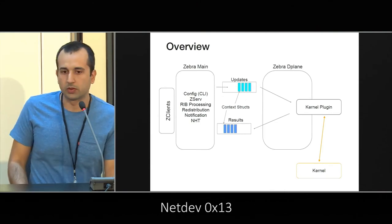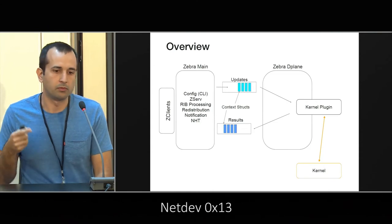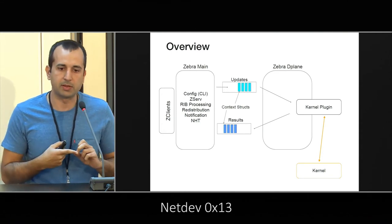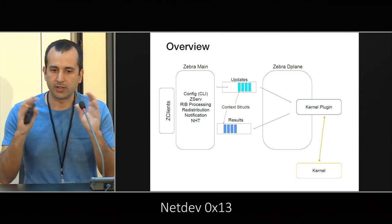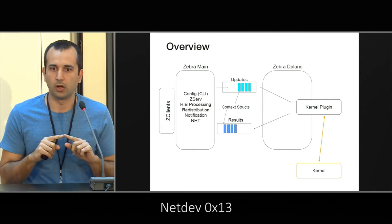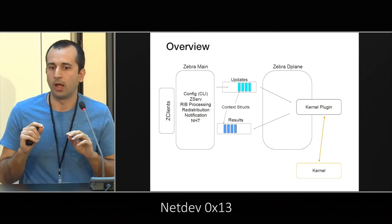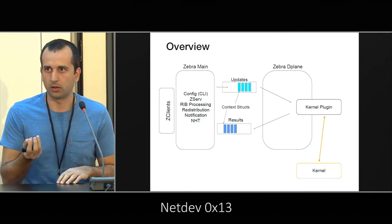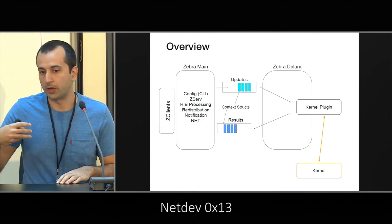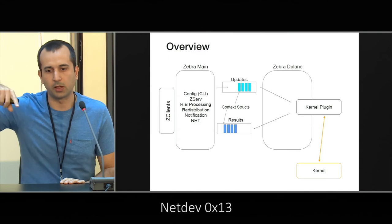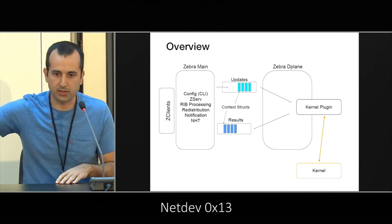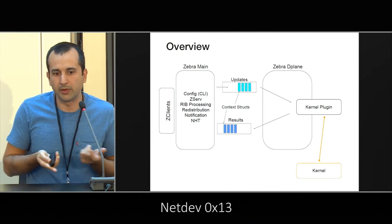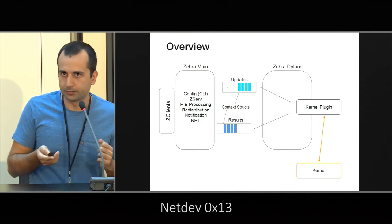Here's what it looks like in more detail. The Zebra main thread gets some notification — maybe from a daemon or some nexthop tracking event — and decides that something has to be changed in the forwarding plane. It takes a snapshot of the internal state of the object to be changed, and through the API creates a context object. That context object is put into a queue going to the data plane thread. The data plane thread takes that object and passes it to the registered kernel provider, which does its work. Eventually a result comes back to Zebra, and you can update the route state or notify route owners accordingly.